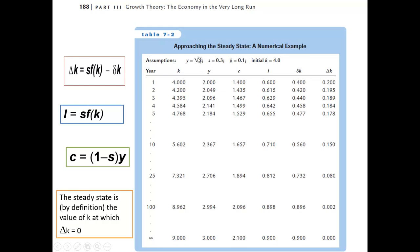Using the square root production function per worker, with capital equal to 4, we calculate income per worker. The output values computed include 1.4, 1.5, 1.6, and up to 2 per worker, moving through the table of capital and output.